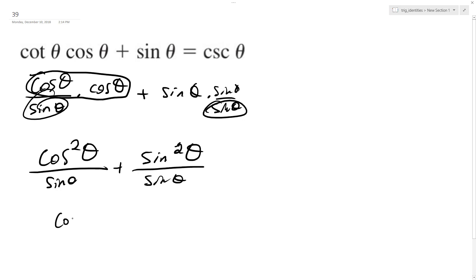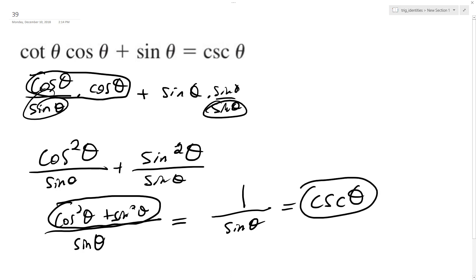So I have cosine squared theta plus sine squared theta over sine theta. Combine these and I get one, it's a trig identity, over sine theta, which is equal to cosecant theta. And that's it. I hope that helped you out. Thanks for watching, have a great day.